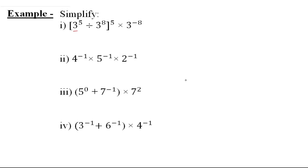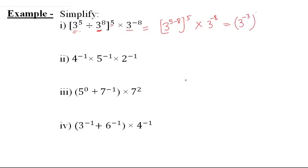First: 3 raise to the power 5 divided by 3 raise to the power 8, whole raise to the power 5, multiplied by 3 whole raise to the power negative 8. First we solve the brackets — the bases are the same and division means we subtract exponents. So we get 3 raise to the power 5 minus 8, whole raise to the power 5, multiplied by 3 raise to the power negative 8. That gives 3 raise to the power negative 3, whole raise to the power 5, multiplied by 3 raise to the power negative 8.